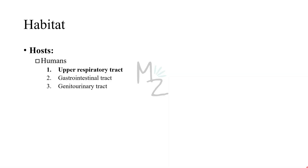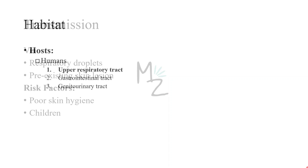Habitat. Humans are the only host. Both toxigenic and non-toxigenic organisms reside commonly in the upper respiratory tract, but they can also be found in the gastrointestinal and genitourinary tract. The only difference between toxigenic and non-toxigenic Corynebacterium diphtheriae is the production of toxin and the ability to cause disease due to that toxin production.